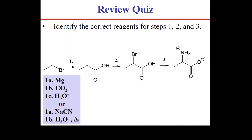The delta symbol represents heat being added to the system, which usually means we're doing more than just putting a proton on. In the second part of the synthesis, we need to add a halogen to the alpha position of a carboxylic acid. This is the Hell-Volhard-Zelinsky reaction. It requires a molecular halogen — Br2, Cl2, or I2 — in the presence of a phosphorous trihalide catalyst. We didn't look at the mechanism for this reaction, but this will put a halogen on at the alpha position.